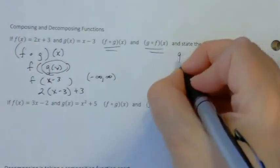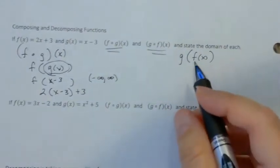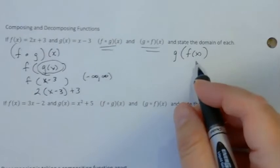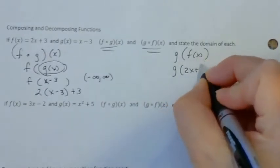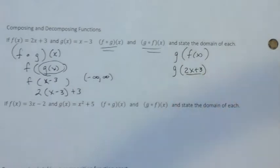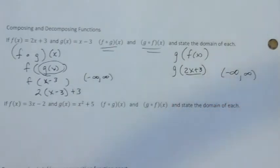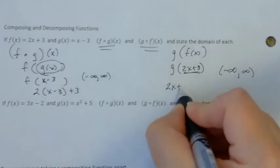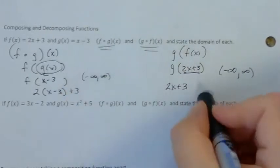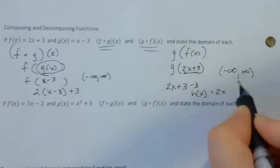Let's think about g composed with f. So this time, the inner function is going to be f. So I can think about 2x plus 3. That's linear. So it's going to have a domain of negative infinity to infinity. And now I'm going to put this as the input into the g function. So I'm going to have 2x plus 3, subtract 3. So the new function would just be 2x.